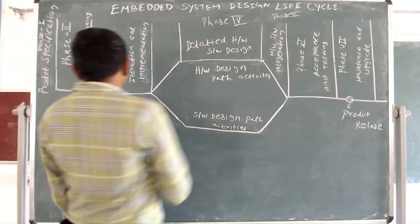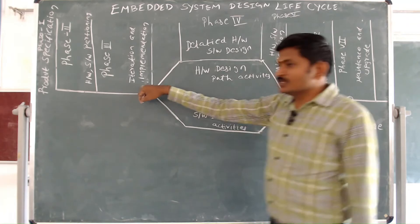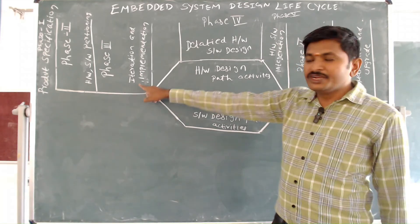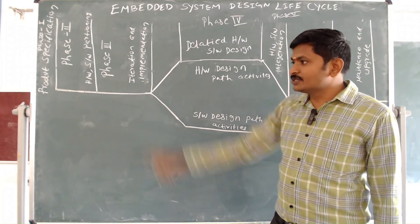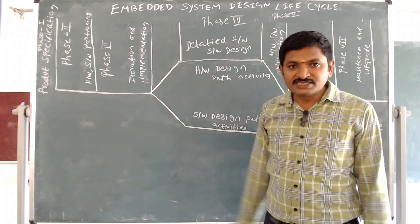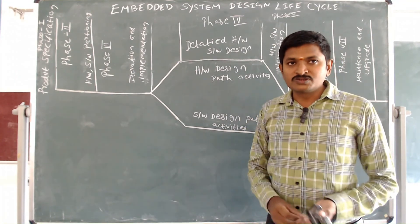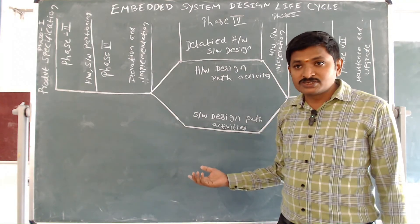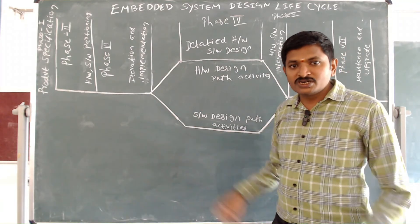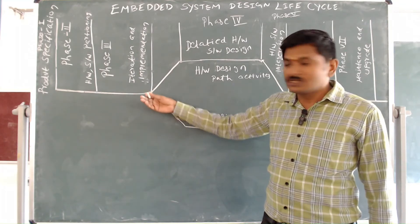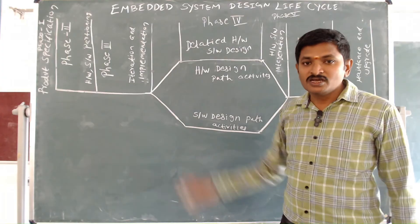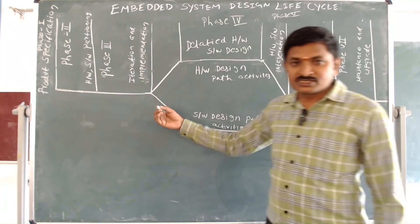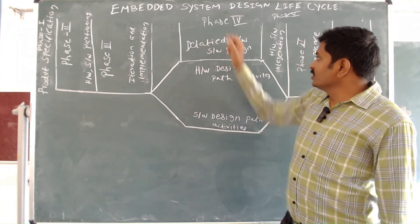The next phase is phase three: iteration and implementation. In this phase, we continuously and repeatedly update or modify the code until we get the desired output. Hardware engineers can use hardware simulators to develop models or architectures, while software engineers can use benchmarks or self-combined benchmarks to test their work.